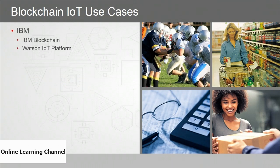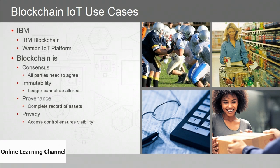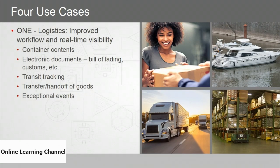IBM has been putting a great deal of resources into blockchain — there's the IBM blockchain and Watson IoT platform, focused on bringing blockchain solutions to the enterprise. IBM sees blockchain as being about consensus (all parties need to agree), immutability (the ledger cannot be altered), provenance (a complete record of assets), and privacy (access control ensures visibility). They consider four interesting use cases.